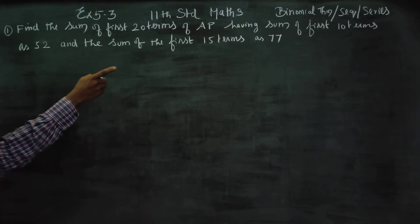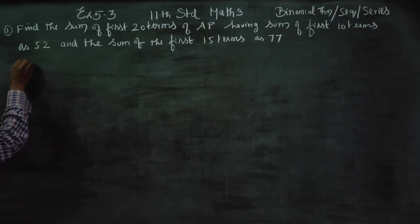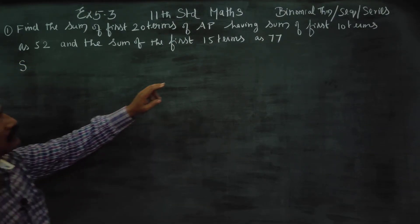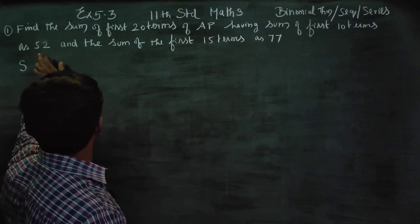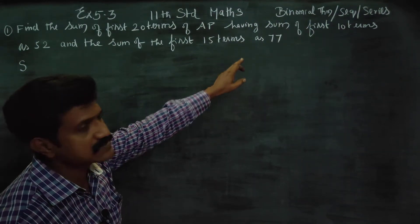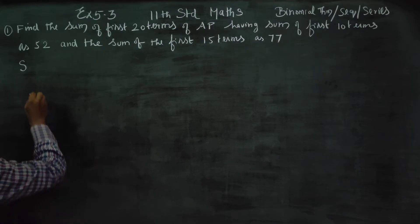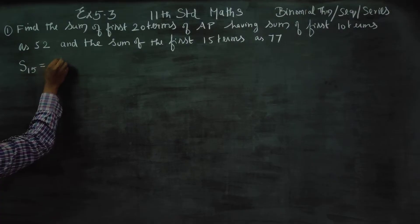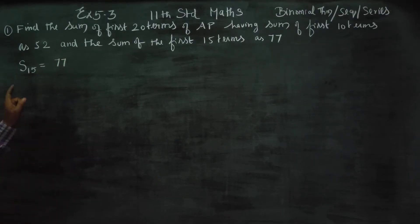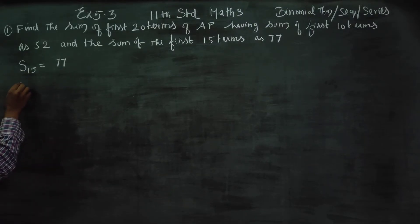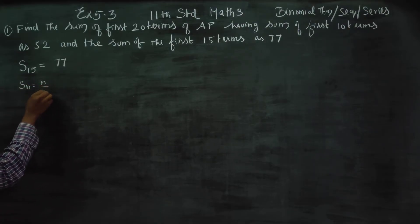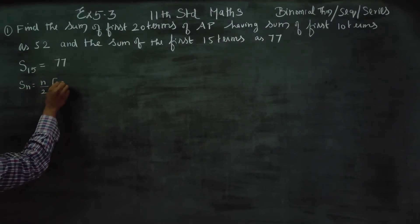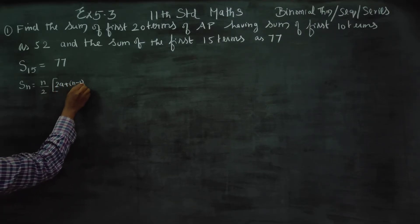First of all, it is given that sum of 10 terms is 52 and sum of first 15 terms is 77. In arithmetic progression, the S_N formula is N by 2 into 2A plus N minus 1 into D.